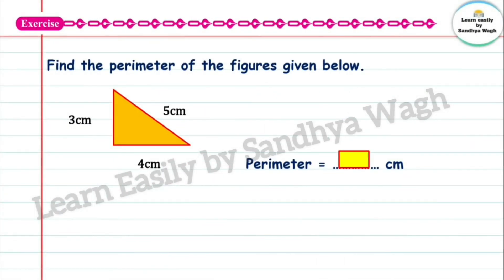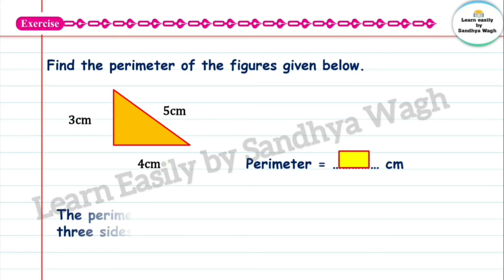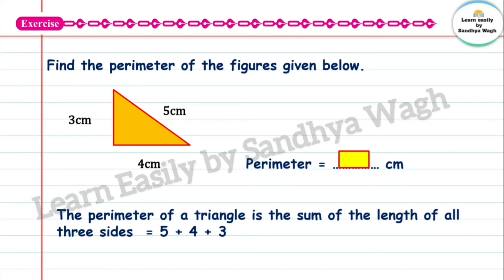This is a triangle. The sides of the triangle are 5 centimetres, 4 centimetres, and 3 centimetres. The perimeter of a triangle is the sum of the length of all three sides. So 5 plus 4 plus 3 is equal to 12 centimetres. The perimeter of this triangle is 12 centimetres.